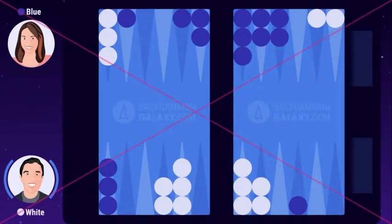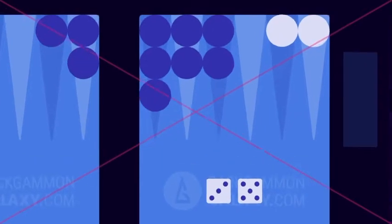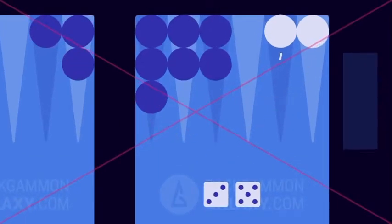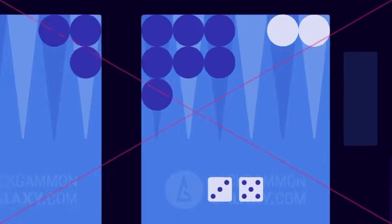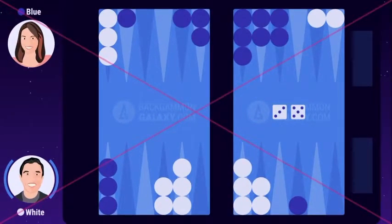We've traveled forward in time, and now the position looks like this. White rolls 3-5. As you can see, white is now unable to move any of his backmost checkers as blue is occupying these points with a four prime. Instead, white chooses another move, which we'll talk about in the following section.